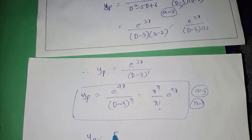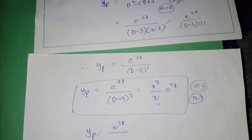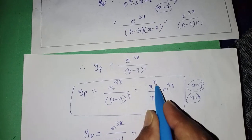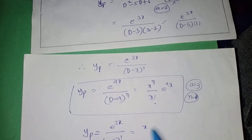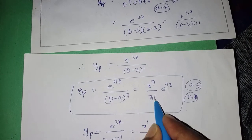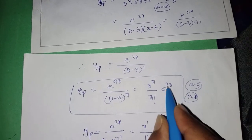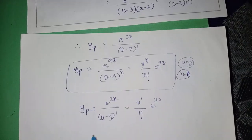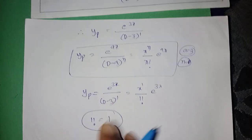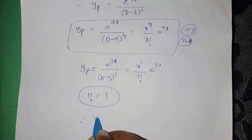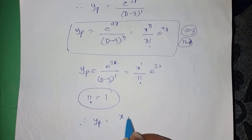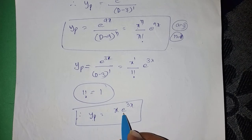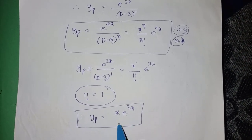Applying the formula with a = 3 and n = 1: yp = e^(3x) / (D - 3)^1 = x^1 / 1! · e^(3x). Since 1! = 1, this gives yp = x · e^(3x). Therefore, the particular integral of the given differential equation is x · e^(3x).